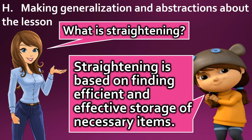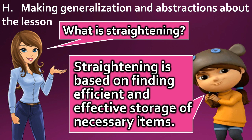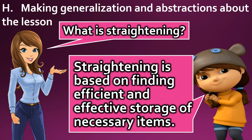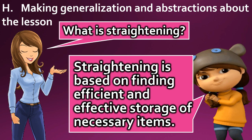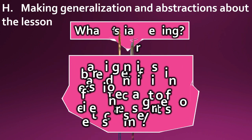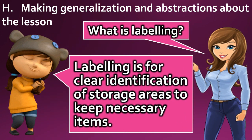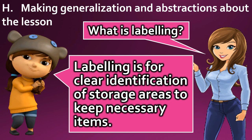Making generalizations and abstractions about the lesson: What is straightening? Straightening is based on finding efficient and effective storage of necessary items. What is labeling? Labeling is for the clear identification of storage areas to keep necessary items.